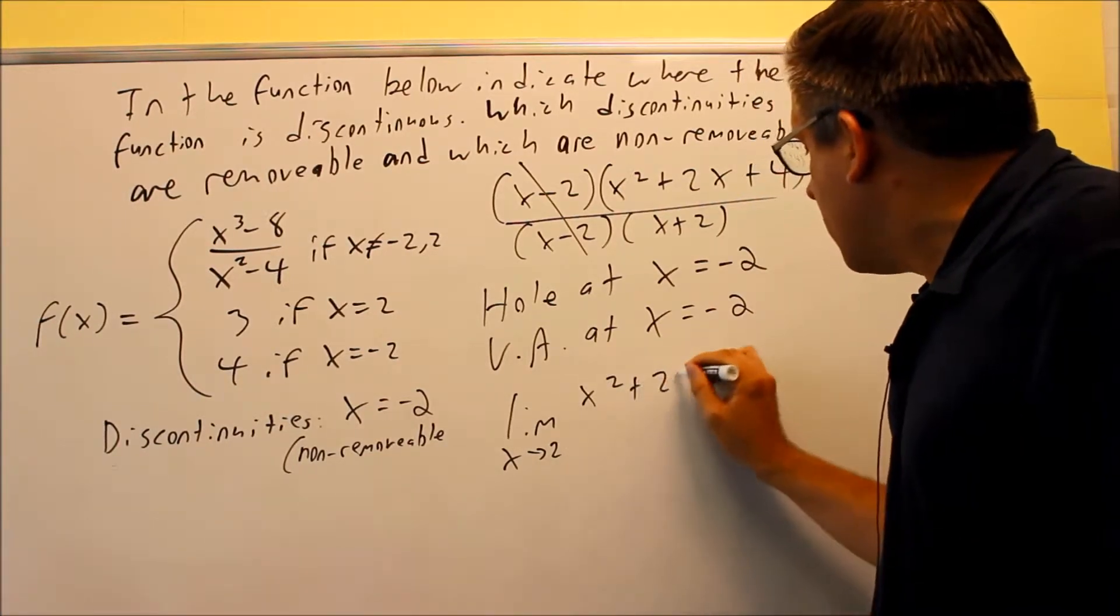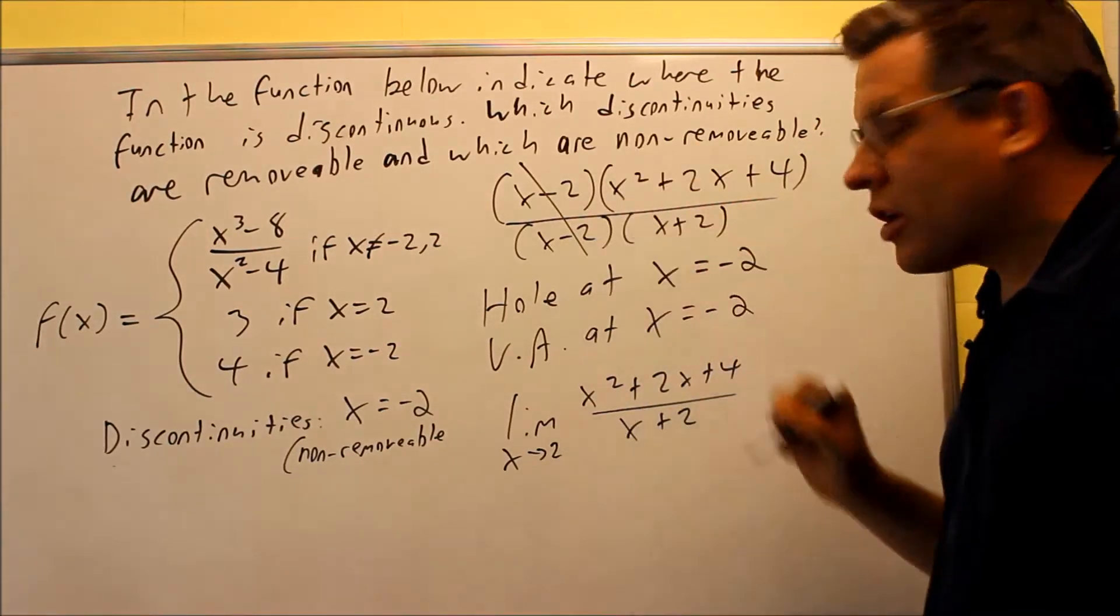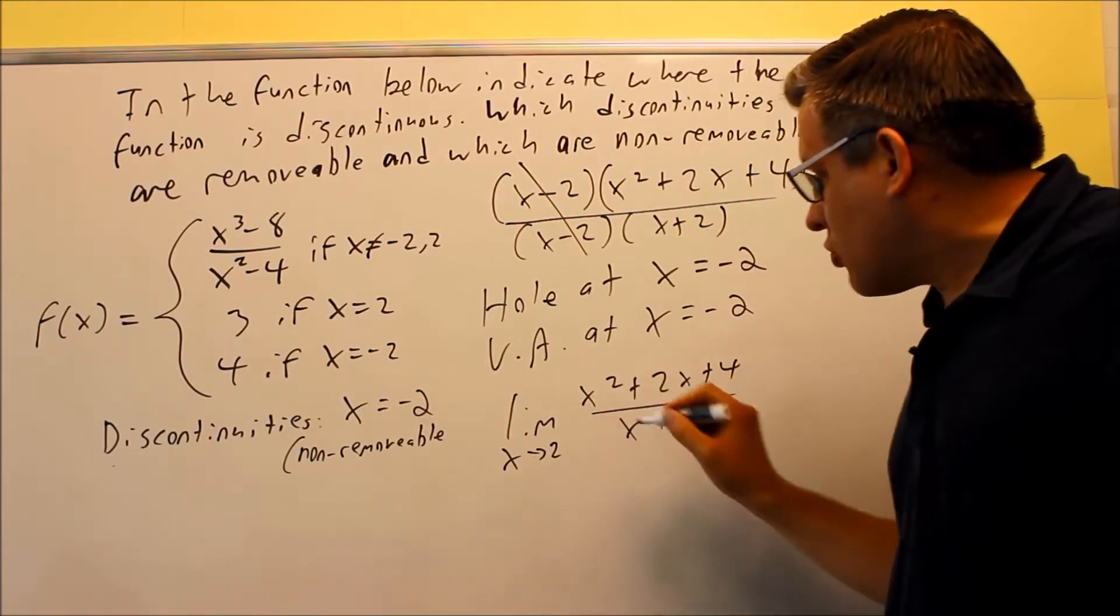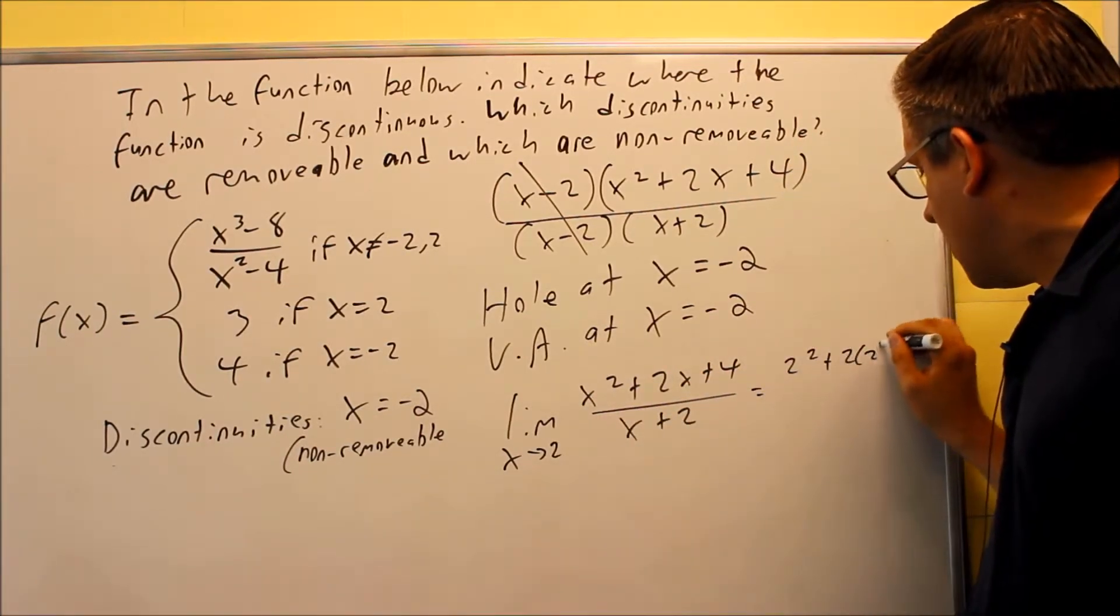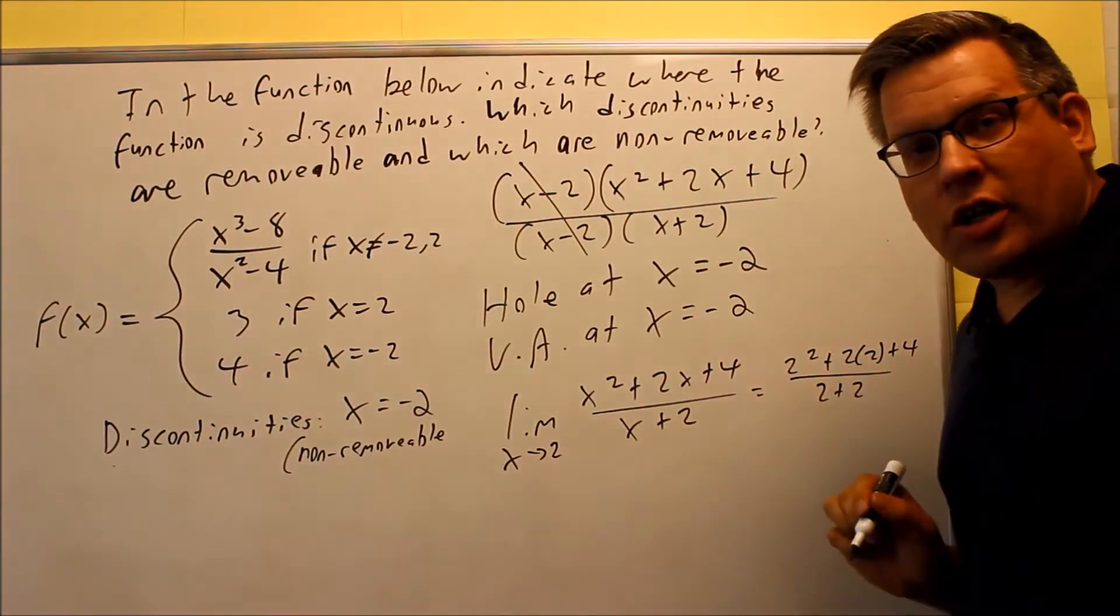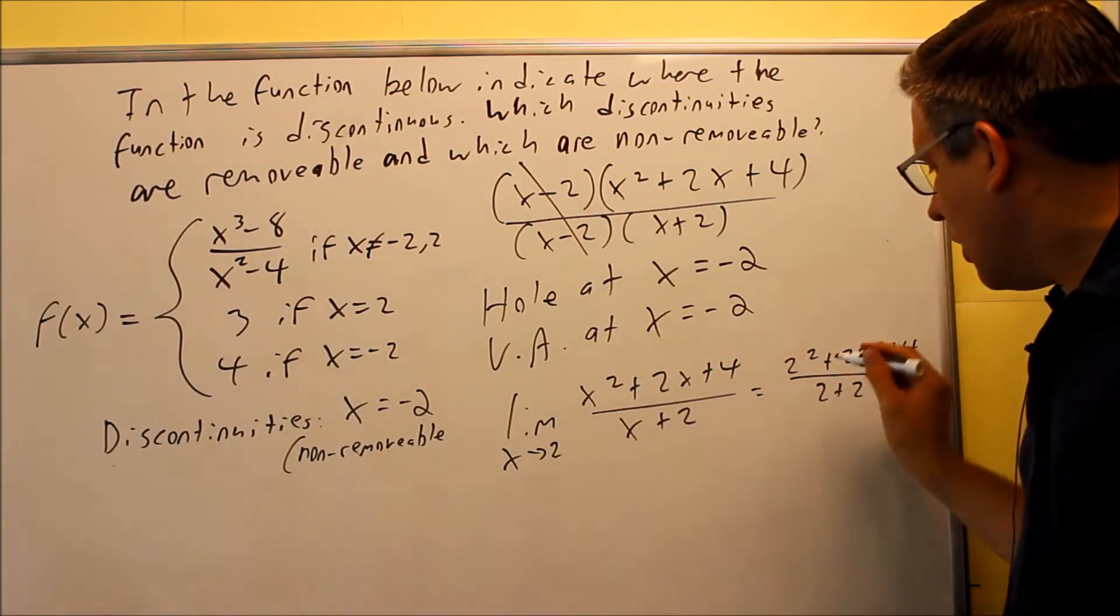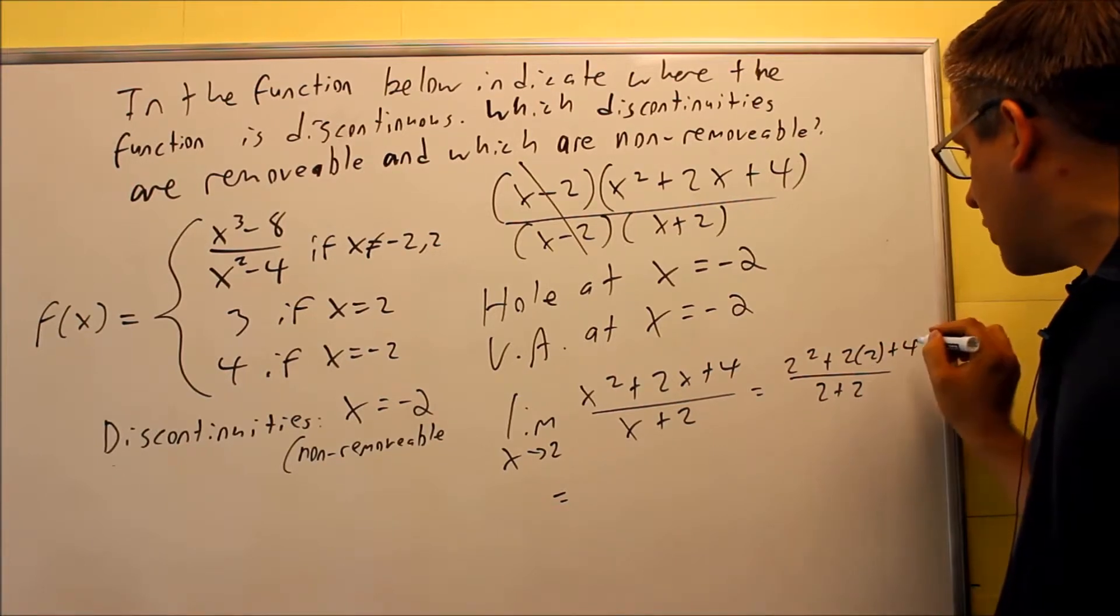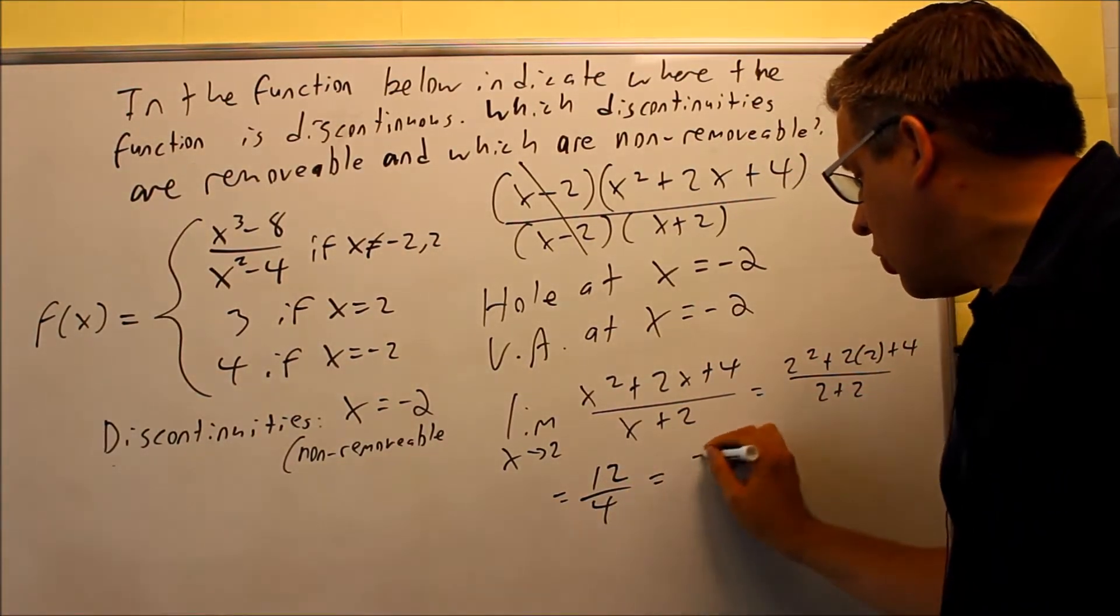We're going to do x squared plus 2x plus 4 over x plus 2 because the other part canceled. And I can plug 2 in there, I'm not going to be dividing by 0. So let's see what happens. When I put 2 in there for all the x's, I can just plug it in now because of that, since I'm not dividing by 0. So I'm putting in 2 for all the x's, I'm checking the limit out as x approaches 2. When I do that, I'm going to get 4 plus 4 plus 4, so that's going to be 12 on top over 4 on the bottom, which is going to be 3.